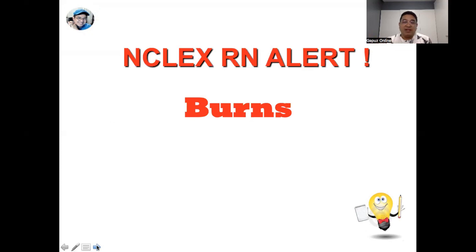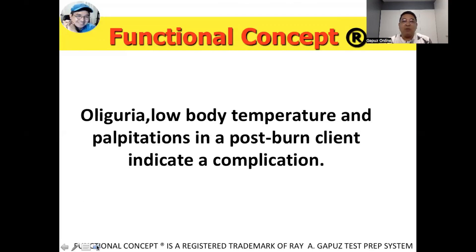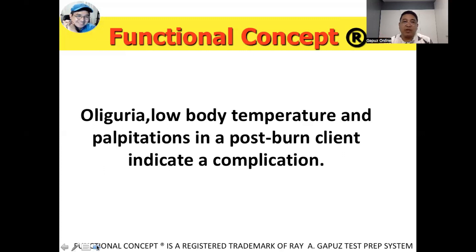Now let's talk about burns. The functional concept: oliguria, low body temperature, and palpitations in a post-burn client indicate a complication. When you see oliguria — very minimal urine output less than 30 ml per hour — in a burn patient, suspect hypovolemia. Your priority should be to administer fluids intravenously and monitor urine output. When there's low body temperature, suspect hypothermia — keep the patient warm. When you see palpitations, sometimes with chest pain, the patient could be experiencing hyperkalemia, because burned tissues release potassium into the bloodstream.